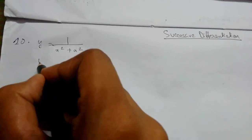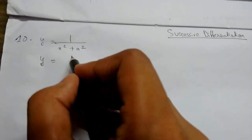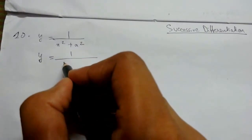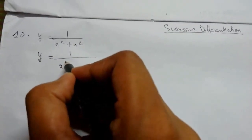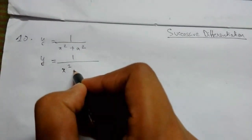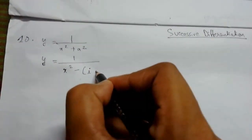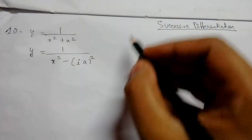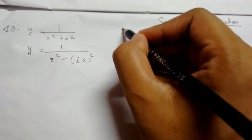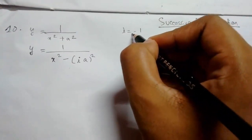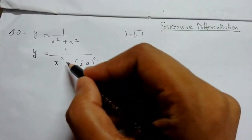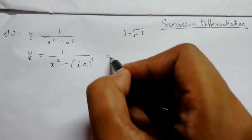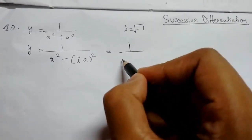We won't directly proceed to y₁. First we will try to arrange it properly so we can use it to our advantage. We write x² + a² as x² minus (iota·a)², where i is the square root of minus 1, so squaring it gives the same result. Further simplification is required.